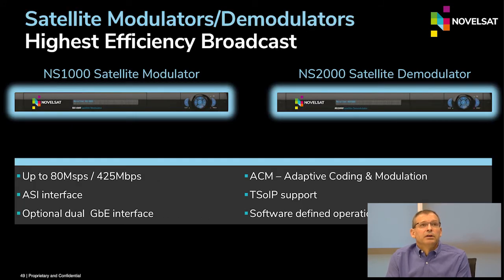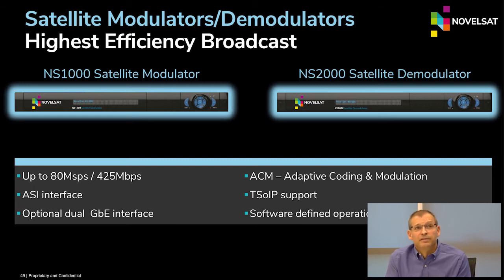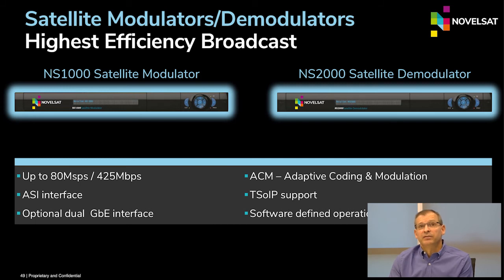Novelsat's modulators and demodulators have been deployed in thousands of networks and broadcasters for a long time. They deliver very high bandwidth with advanced functionalities, multiple IP and ASI interfaces, and software-defined transmission schemes supporting DVB-S2, DVB-S2X, and our proprietary NS4 waveform — which delivers up to 20–30% more bandwidth than DVB-S2X, or up to 60% more capacity than standard DVB-S2.